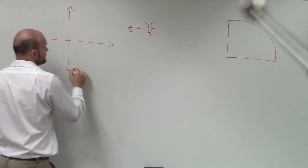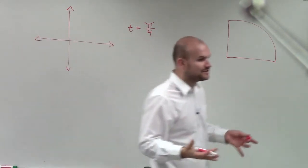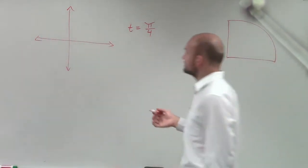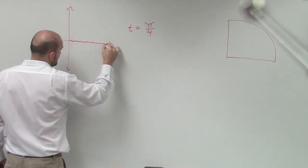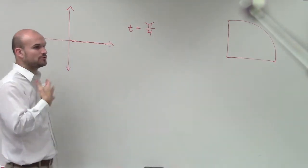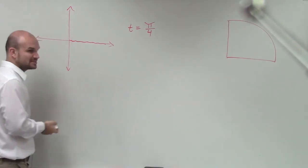So remember, π over 4, to write it, draw an angle, we have to know what standard form is. Remember, standard form has our initial side, and then our terminal side is going to be the rotation of π/4, wherever it's going to land.